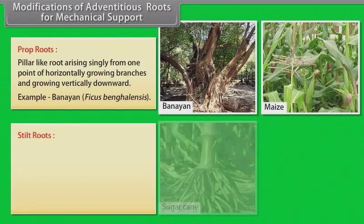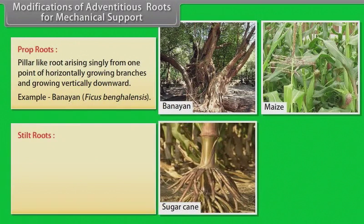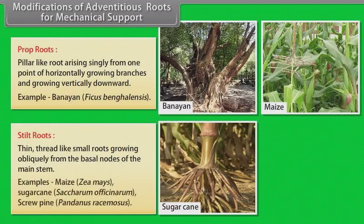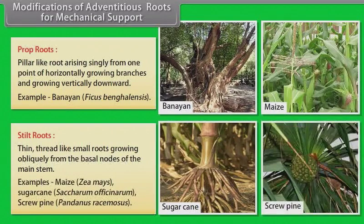Stilt roots — thin, thread-like small roots growing obliquely from the basal nodes of the main stem. Examples: maize, sugarcane, screwpine.